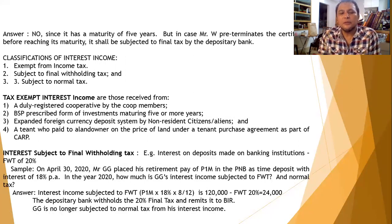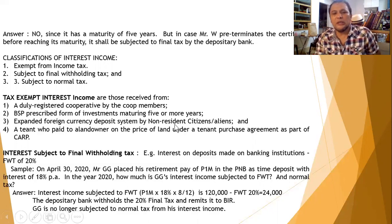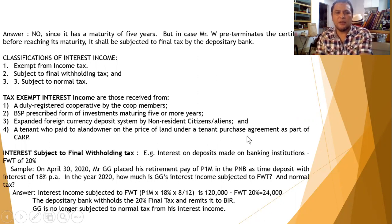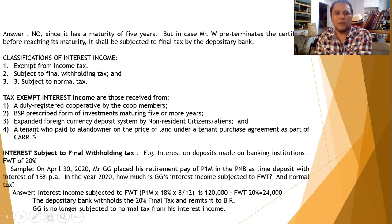Third, in an expanded foreign currency deposit system, if the depositor is a non-resident citizen or a non-resident alien, it is tax-exempt. Fourth, when a tenant paid the landowner on the price of the land under a tenant purchase agreement as part of the CARP — the tenant is a farmer tilling the land of the landowner and they made an agreement under the tenant purchase agreement of CARP — the interest income of the landowner is non-taxable.